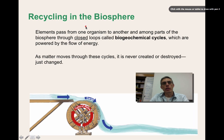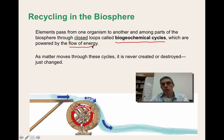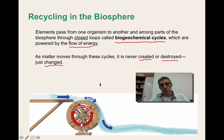If we think about all of this energy, we need to think about how is the energy itself being recycled in the biosphere. We look at something called a biogeochemical cycle. This actually isn't just one cycle — it's actually many cycles. Elements pass from one organism to another and among parts of the biosphere through closed loops called biogeochemical cycles. As matter moves through these cycles, it's never going to be created and it's never going to be destroyed — it's simply going to be changed into a material that those organisms can use.